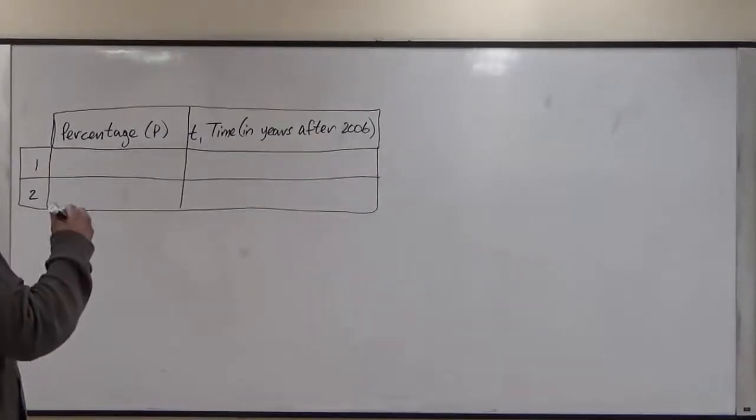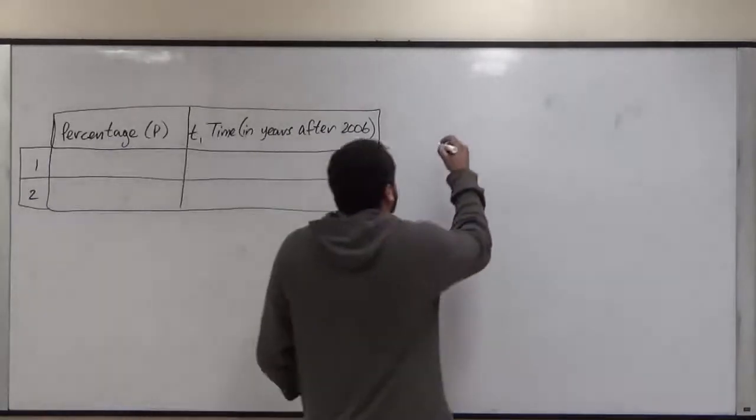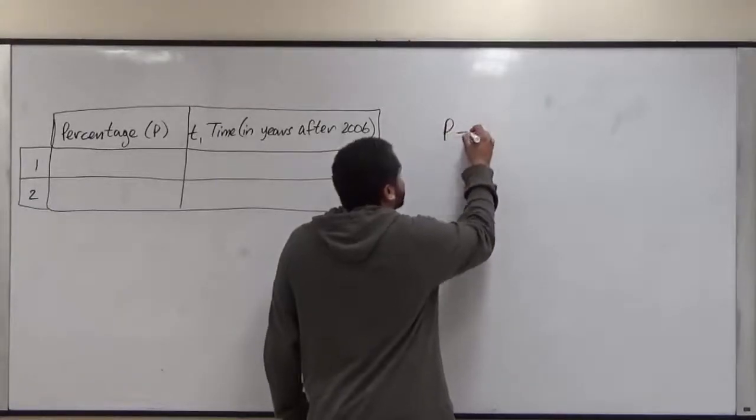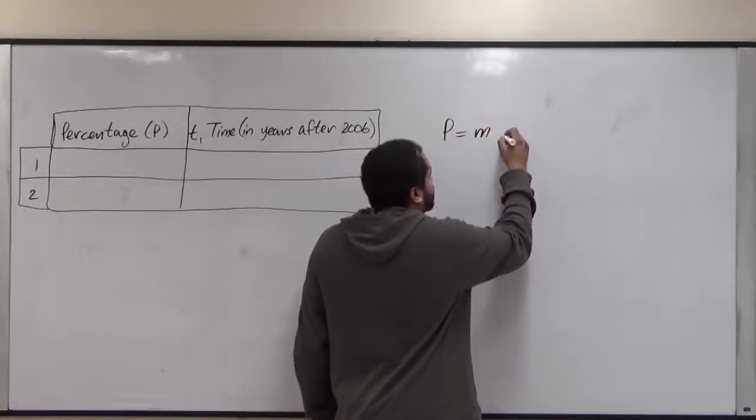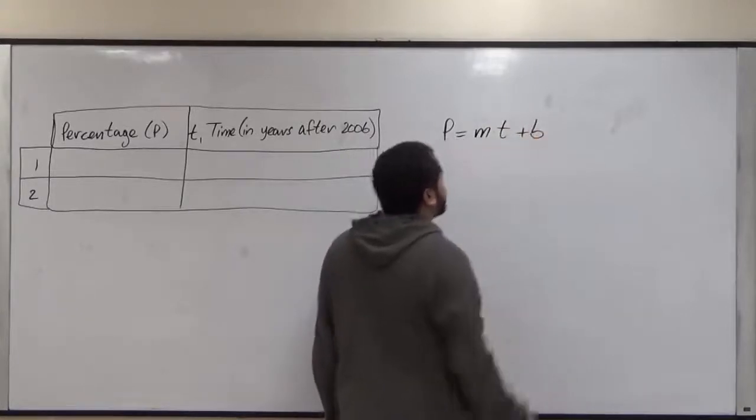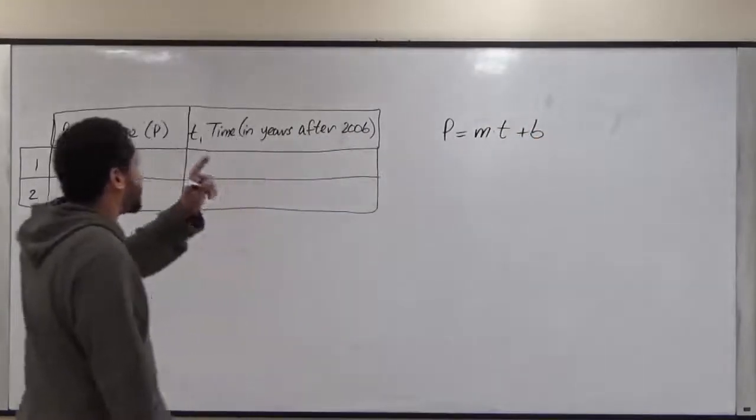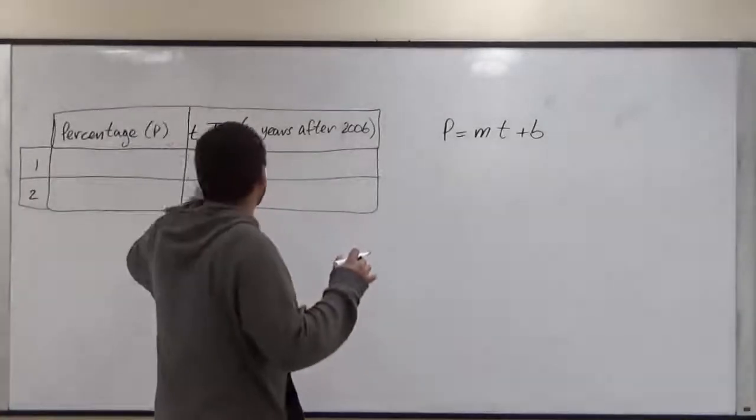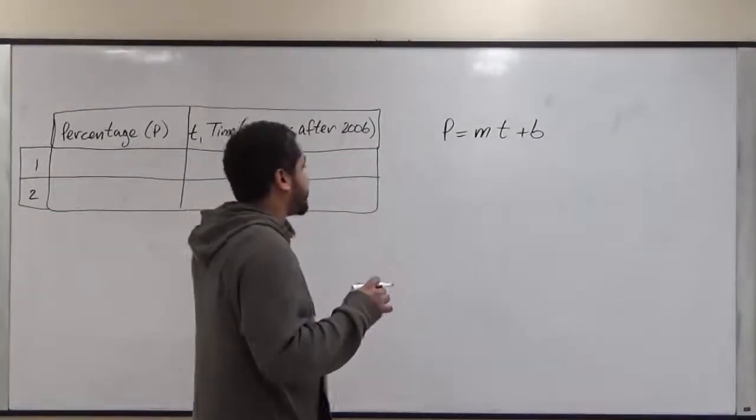it represents a dependent system where we have P as the percentage and we're going to have some value for our slope times the time plus the intercept value. So we have to calculate our slope first and then we're going to get our y-intercept value so we could create the linear model for this setup.